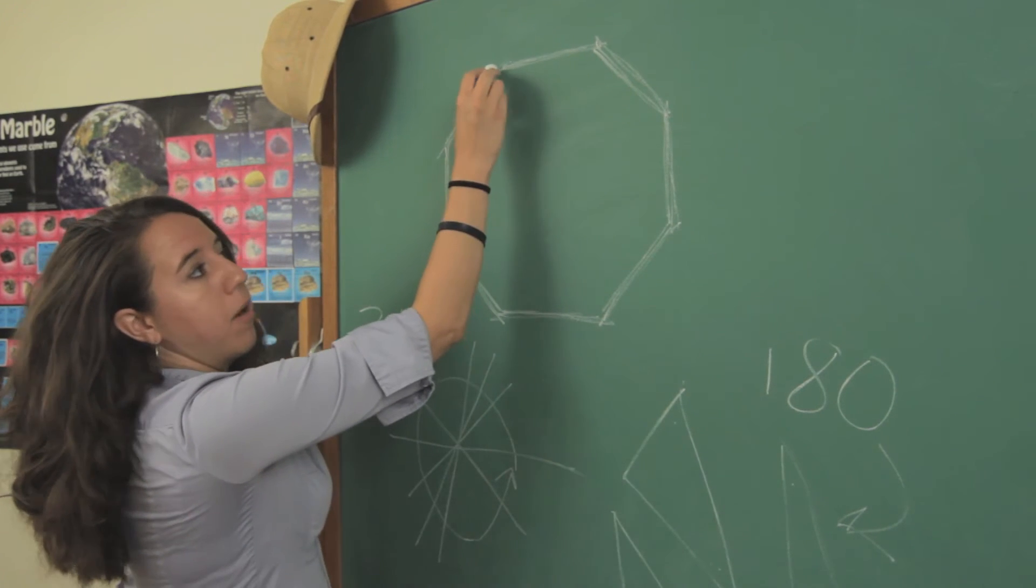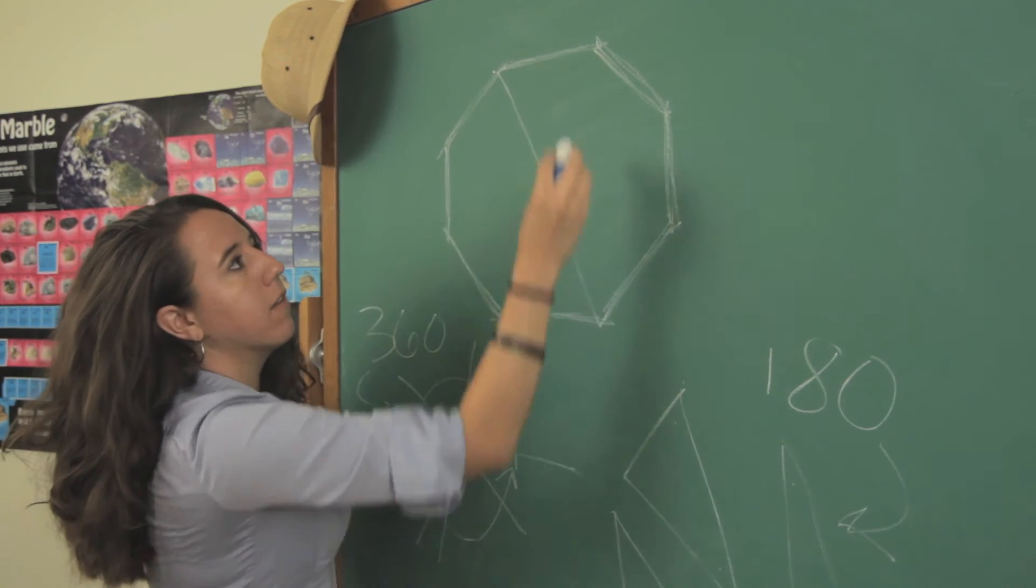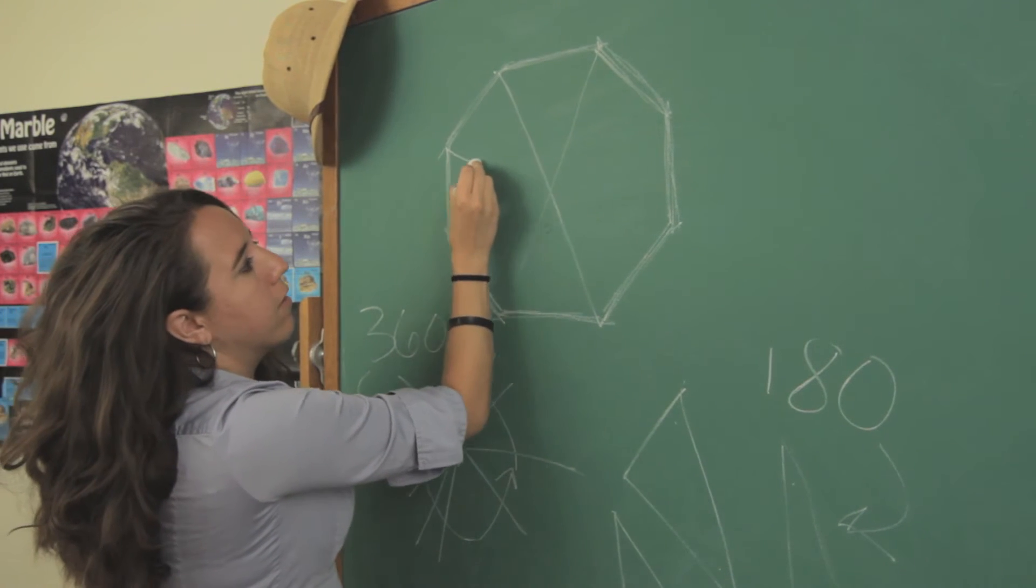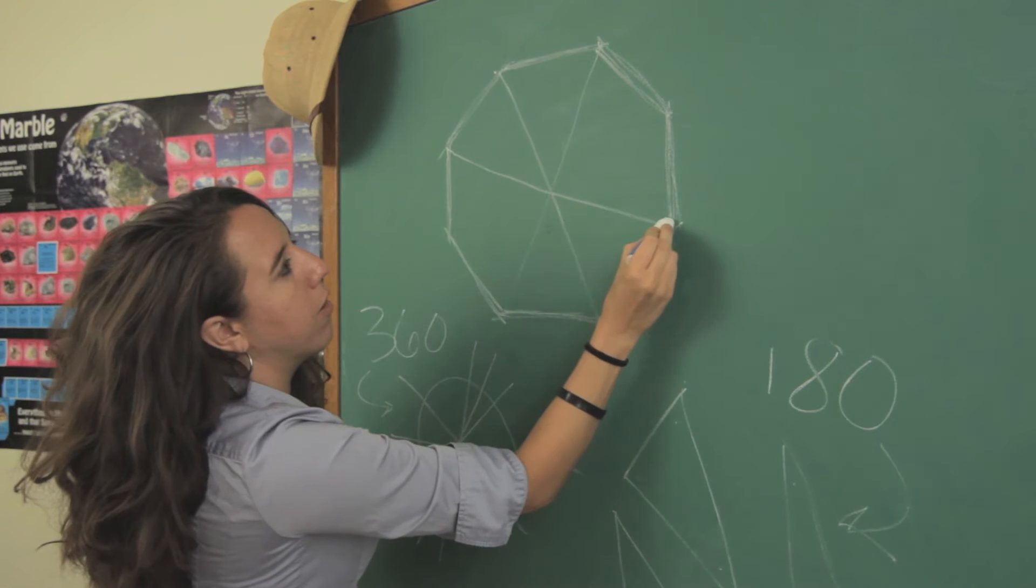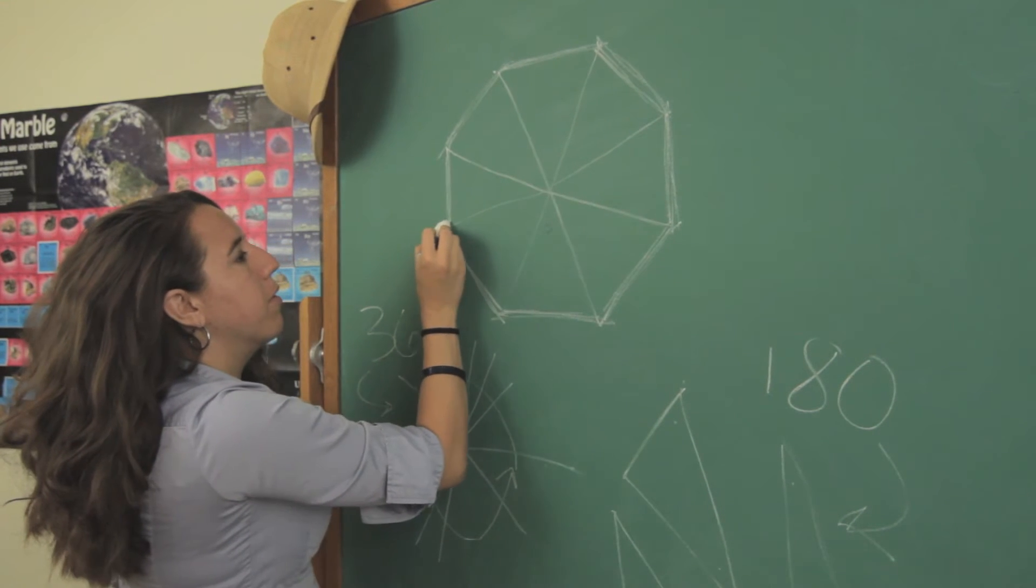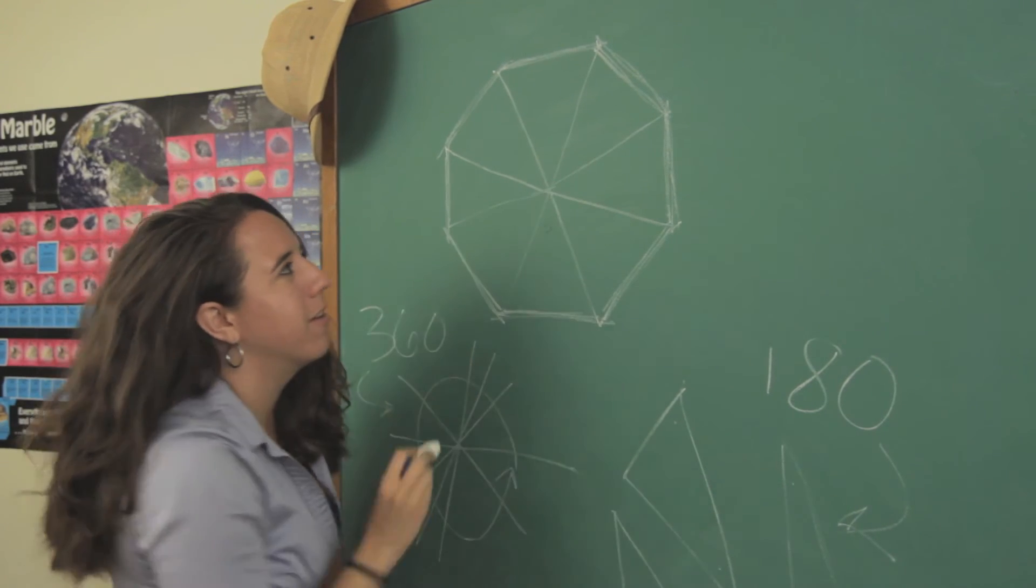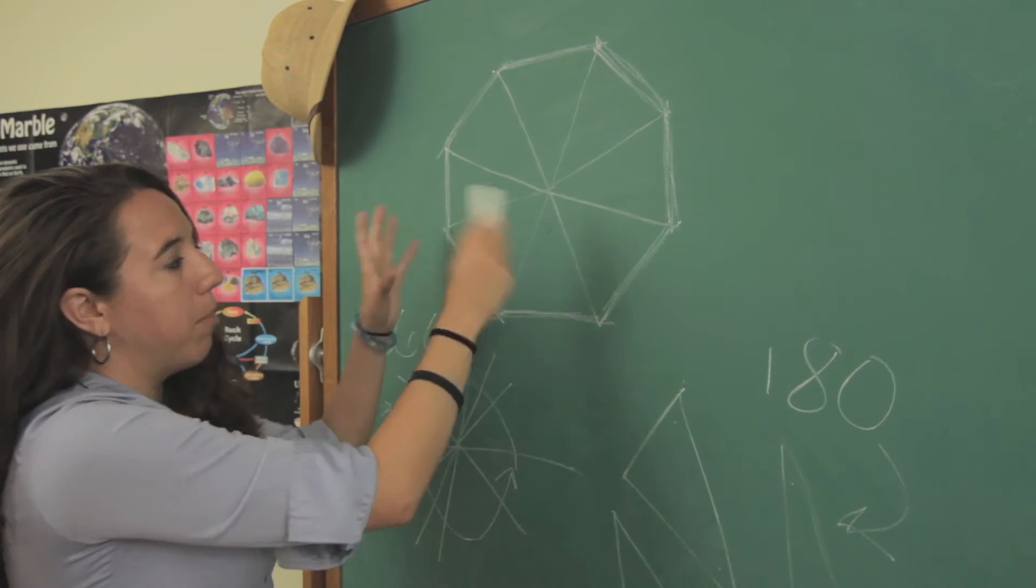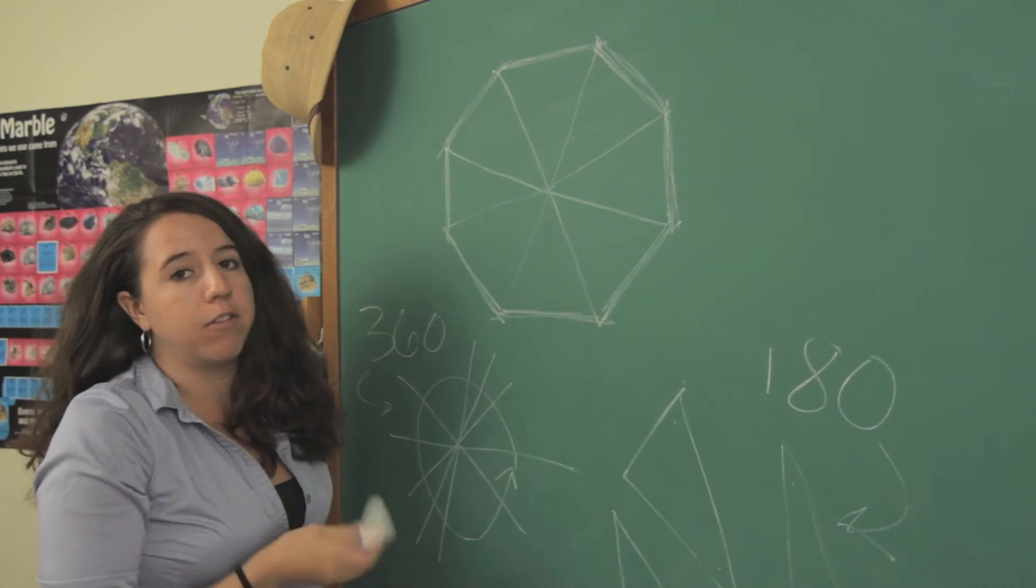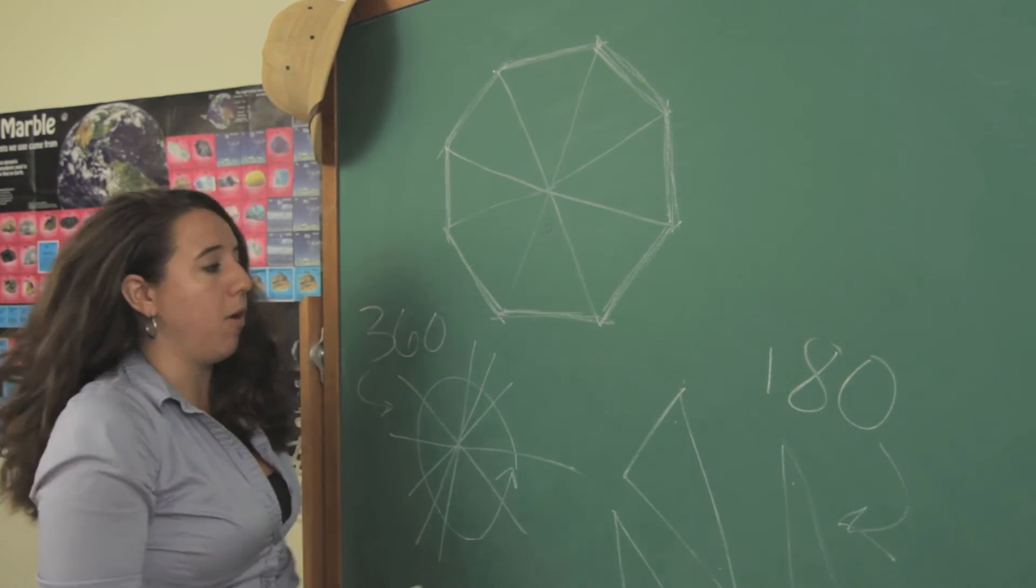Now we're going to split up our octagon into pizza slices by connecting the opposite corners all the way across. We want to make sure that our lines meet perfectly in the middle, if possible. If this were a perfect drawing, all of these triangles would be exactly the same shape, so we're going to assume that they are the same shape for our purposes.